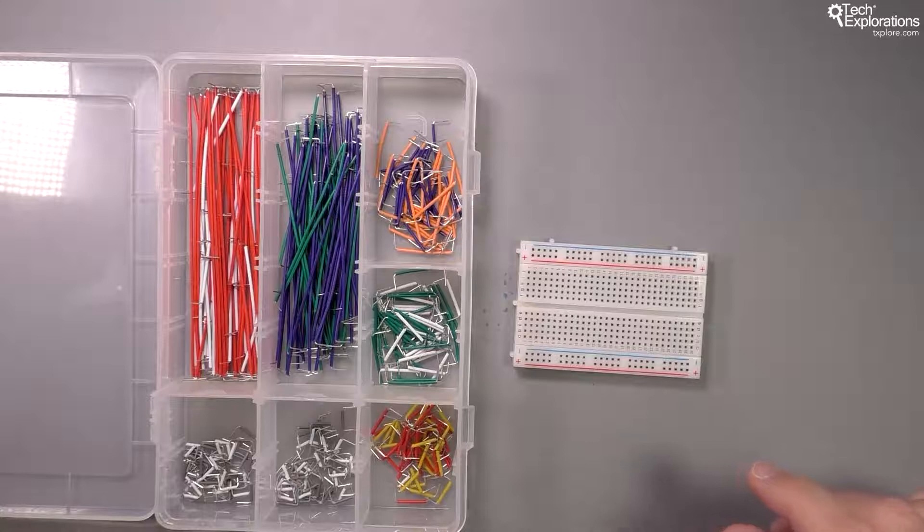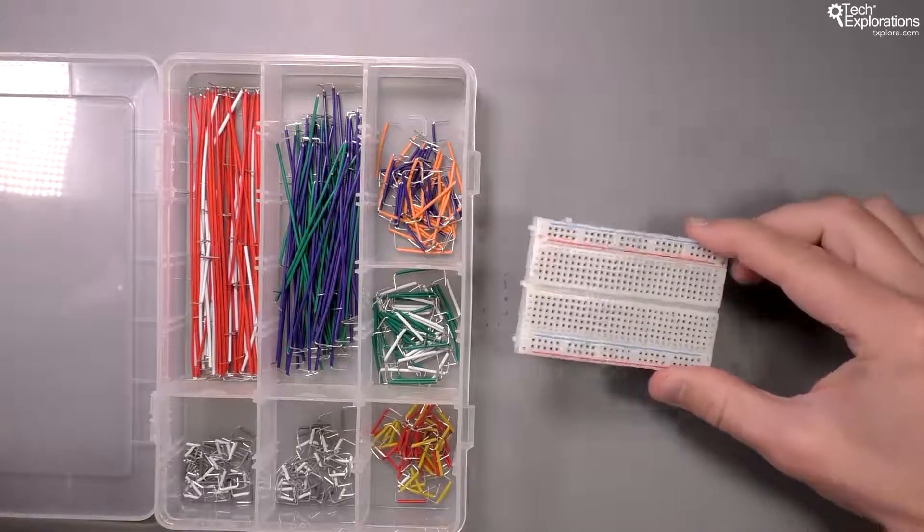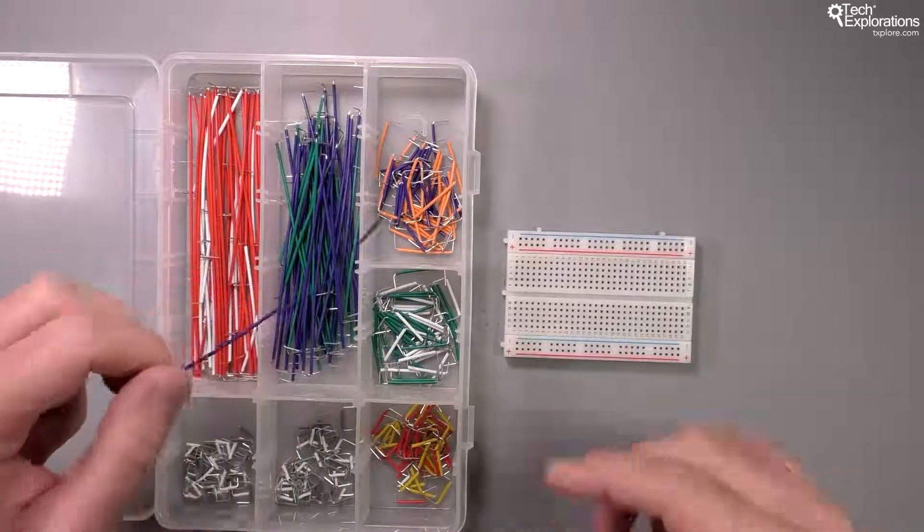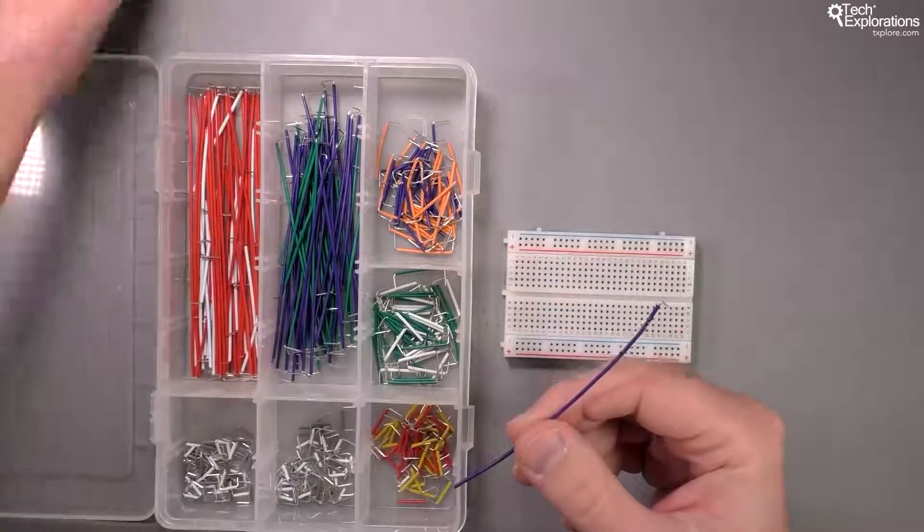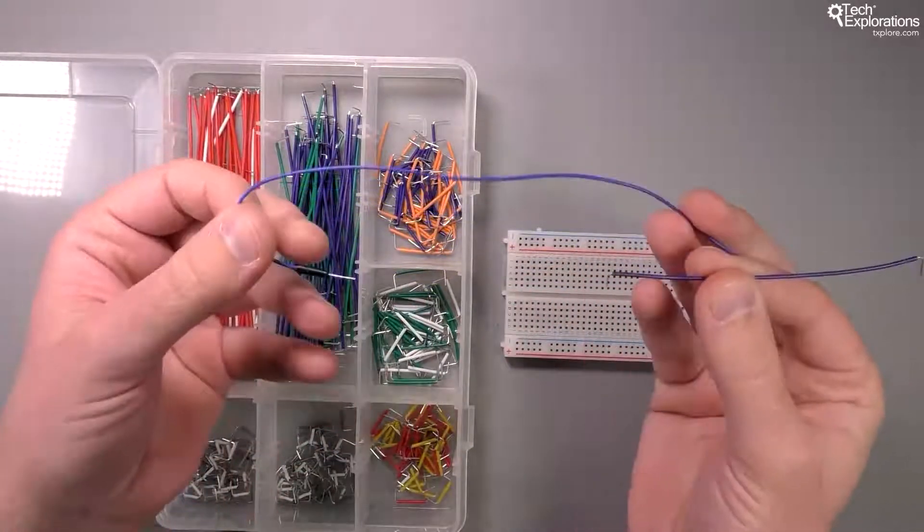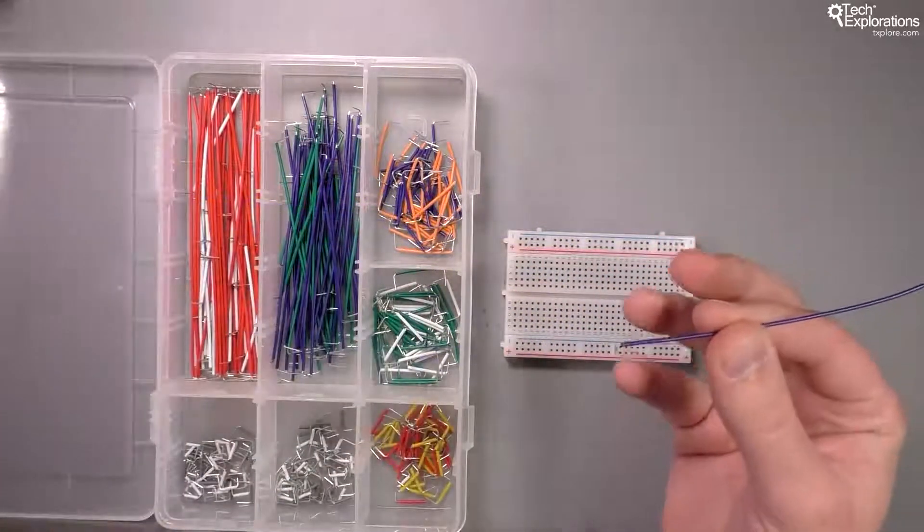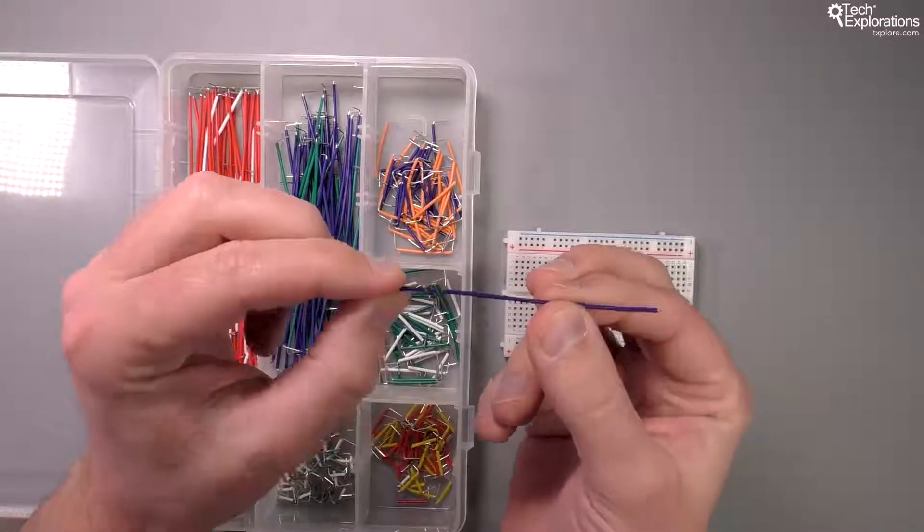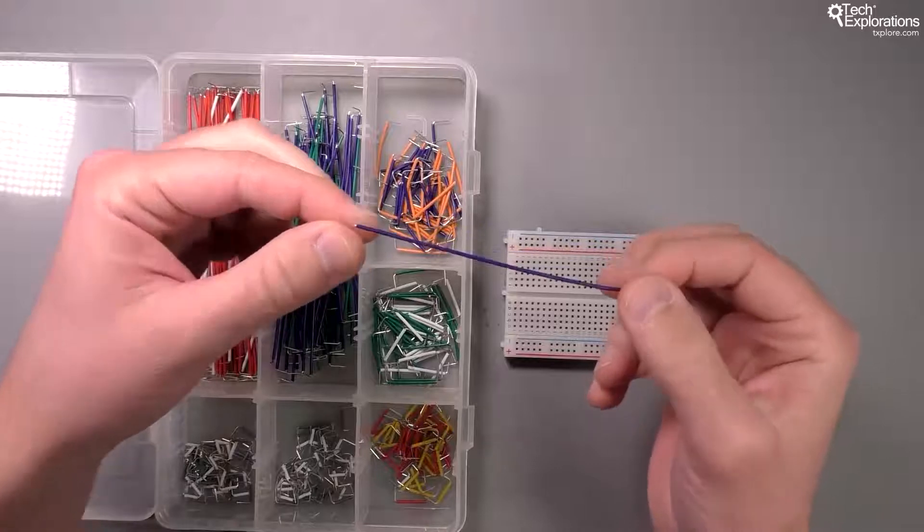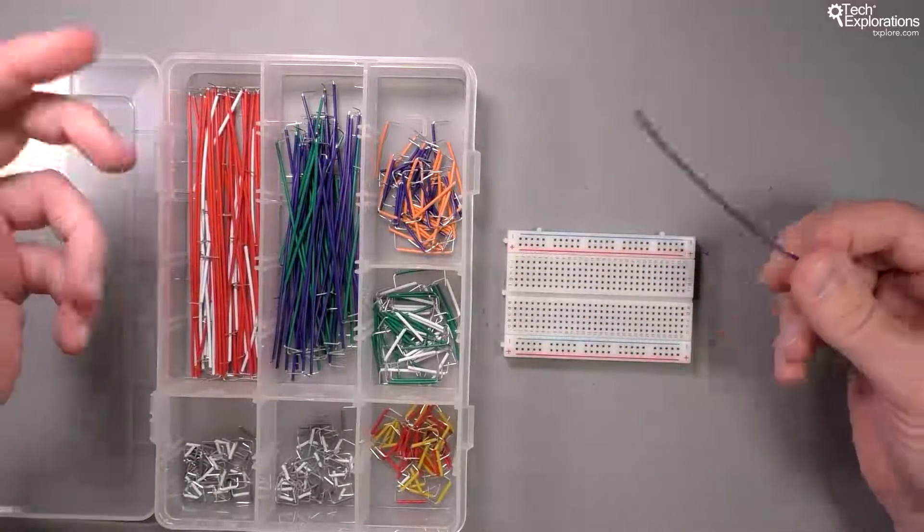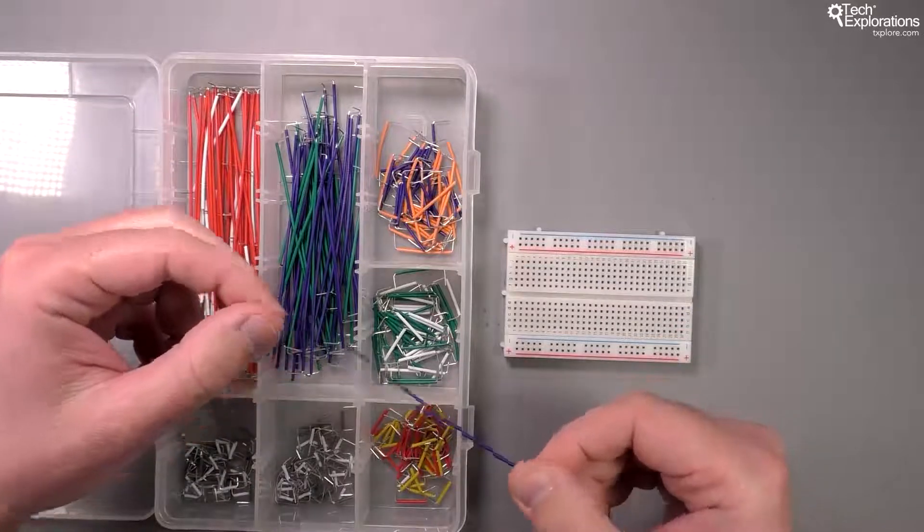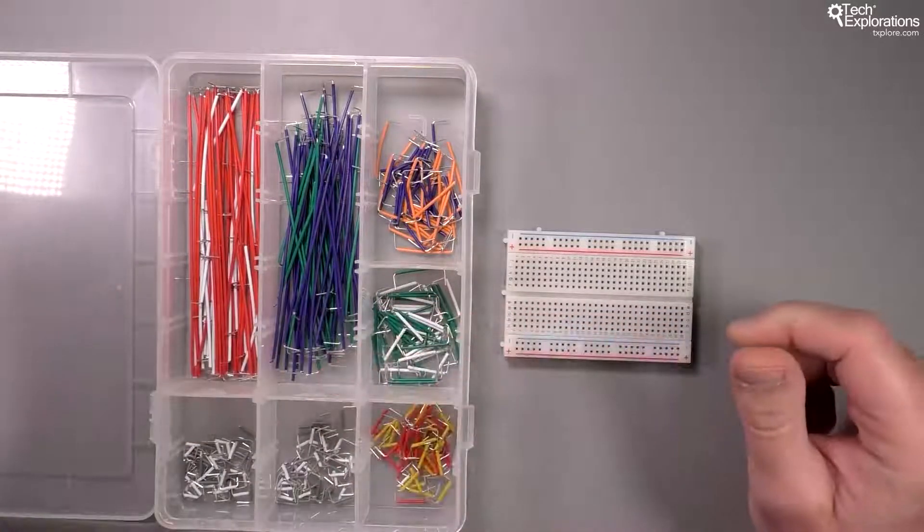Another type of jumper wire that I really like, especially when I work with breadboards, are these type of flat jumper wires. So instead of a jumper wire that looks like this that is flexible, the flat or slightly inflexible jumper wire is very good for creating nice, easy to apply, easy to see connections on a breadboard. So I'll give you an example.